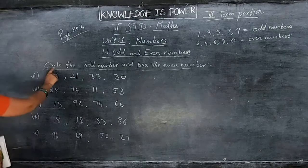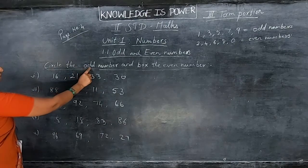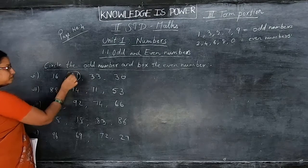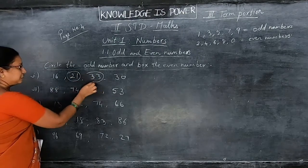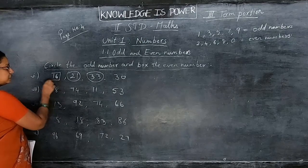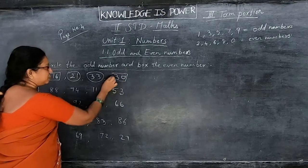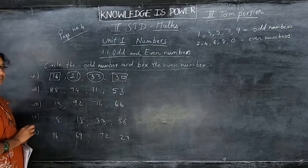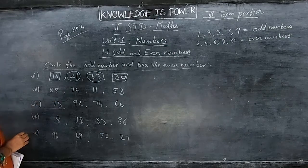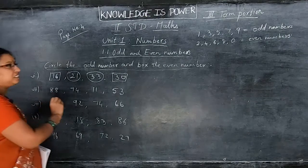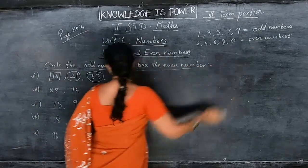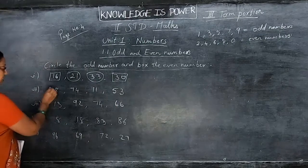See here — odd numbers you are going to circle. Odd number 21: in 1's place, 1 is there. Then 33 is also odd. Even numbers: 6 and 16 — in 1's place, 6 is there. 30 has 0 in 1's place, so box the even number. Then 88: in 1's place 8 is there, so this is an even number — box it.